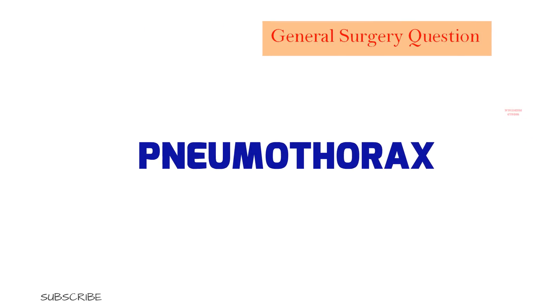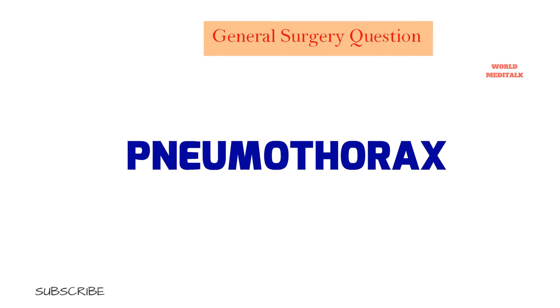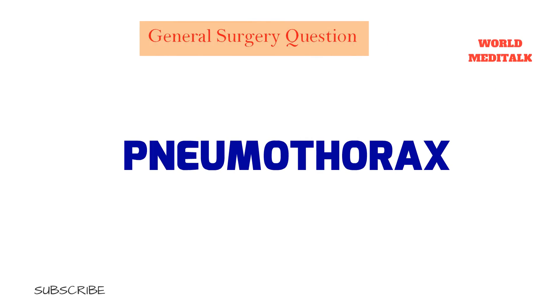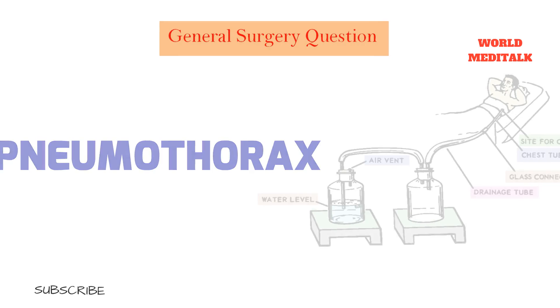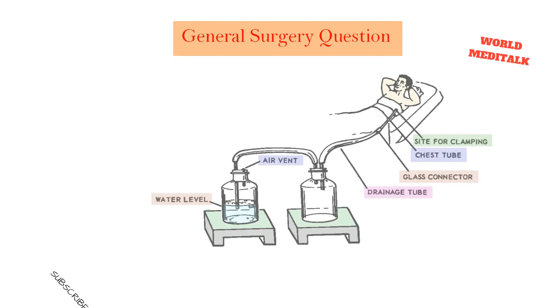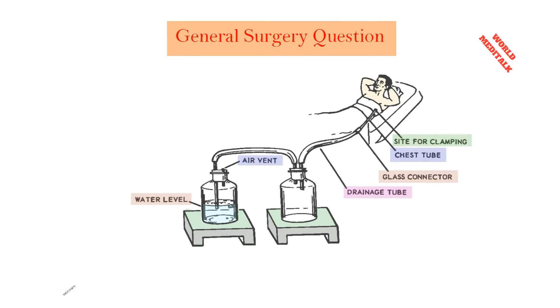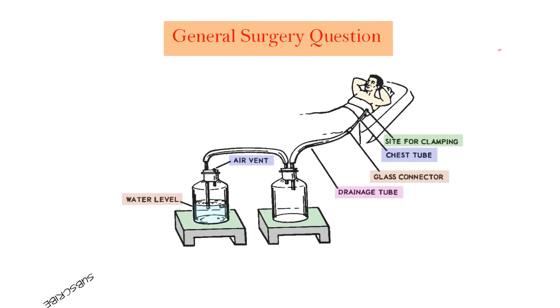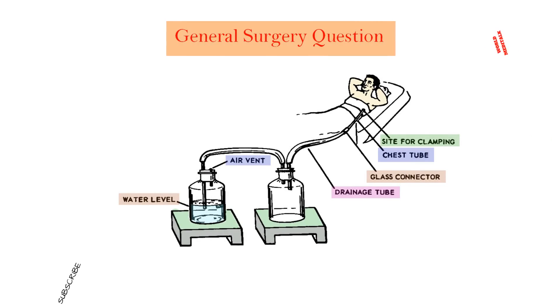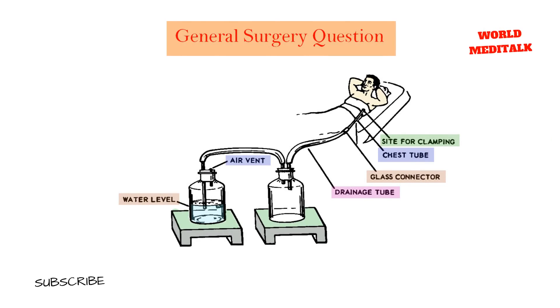Key points: Pneumothorax — most common cause is lung laceration with air leakage. Most traumatic pneumothoraces should have a chest drain. Patients with traumatic pneumothorax should never be mechanically ventilated until a chest drain is inserted.